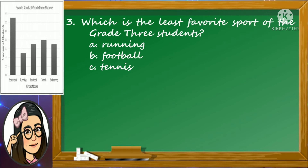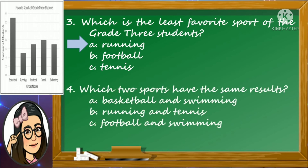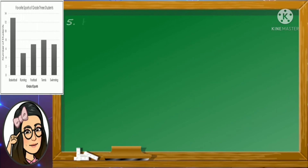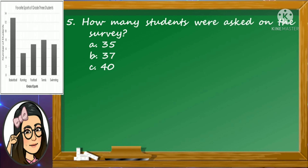Number three: which is the least favorite sport of grade 3 students? Is it A. Running, B. Football, or letter C. Tennis? Very good! The least favorite sport of grade 3 students is running. Number four: which two sports have the same results? A. Basketball and swimming, B. Running and tennis, or letter C. Football and swimming? Number five: how many students were asked on the survey? Is it A. 35, B. 37, or letter C. 40? Good job! 40 students were asked on the survey.